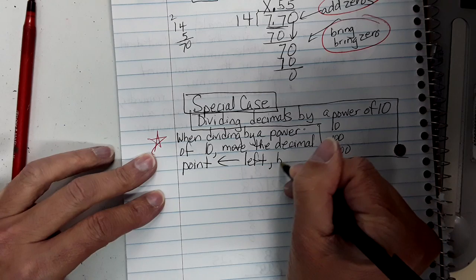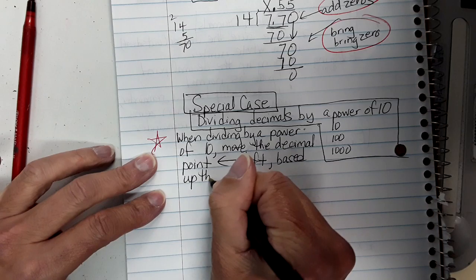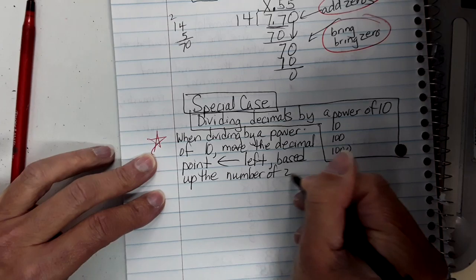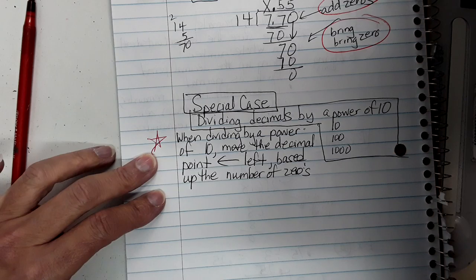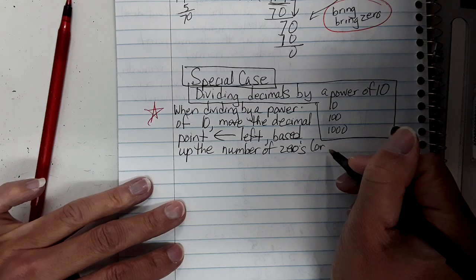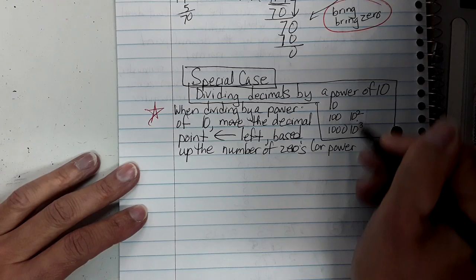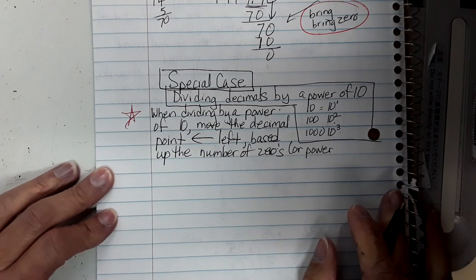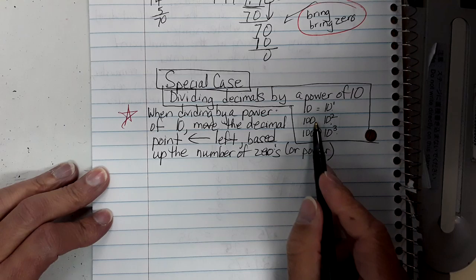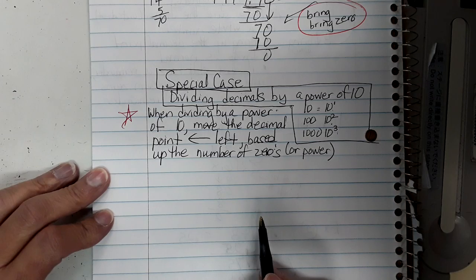Remember, pause the video if I go too fast. You move the decimal point left based on the number of zeros in your base ten, or the exponent if it's written as a power. If I had ten to the second power, I'd move it two spaces; ten to the third power, three spaces. Ten is just ten to the first power. So base it on the number of zeros or the exponent.